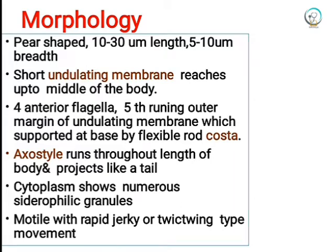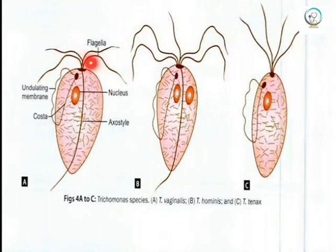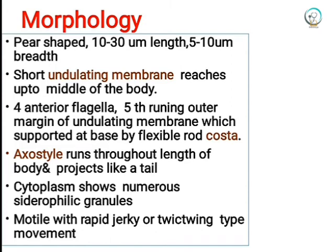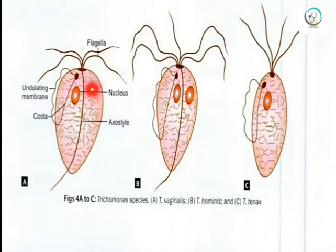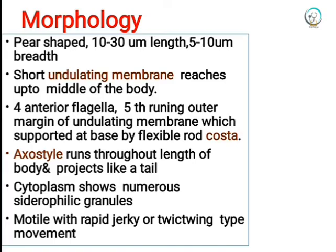The fifth flagellum is supported at its base by a flexible rod known as the costa. An axostyle runs throughout the length of the body and projects like a tail. The cytoplasm shows numerous sidrophilic granules. A characteristic feature of Trichomonas vaginalis is its jerky or twitching type of movement.